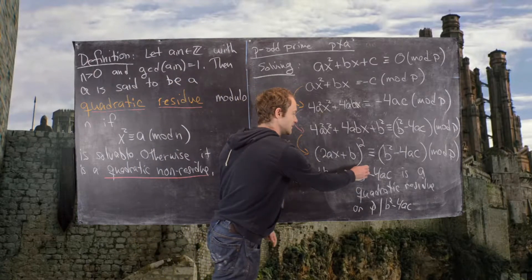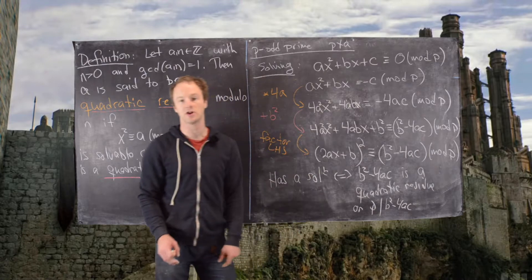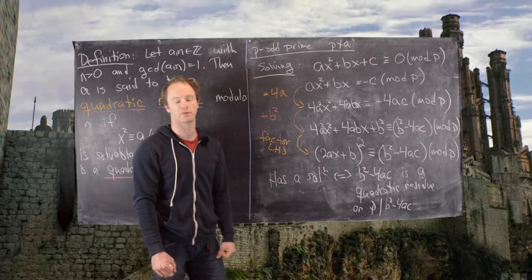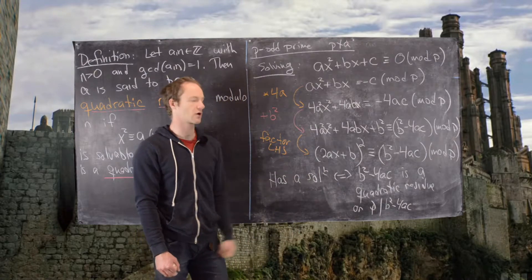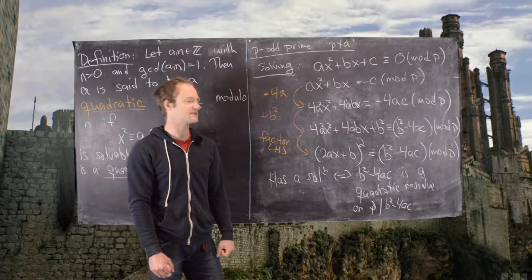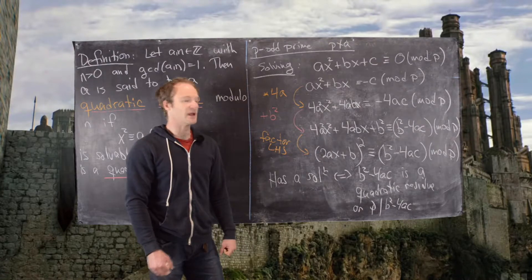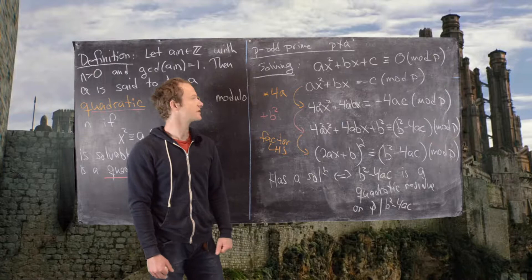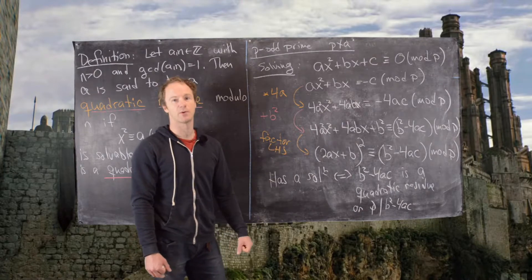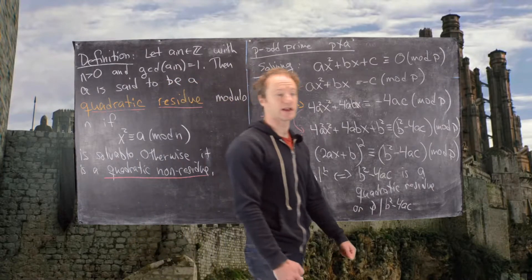So now we know exactly when this is solvable. So notice it has something to do with the discriminant, and it looks a little bit like we're working over the real numbers here, except we're talking about quadratic residues instead of negatives or positives under the square root. I'm going to clean up this board and then we're going to look at an example of this.